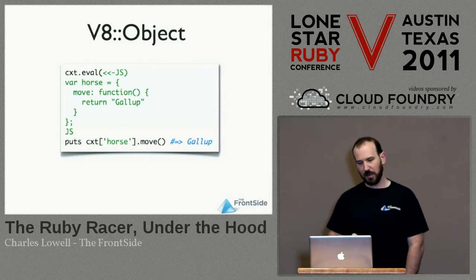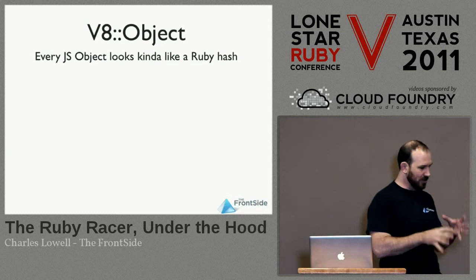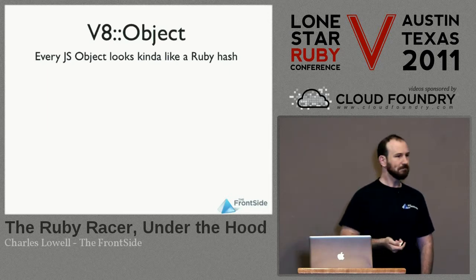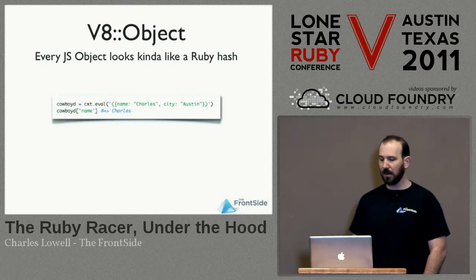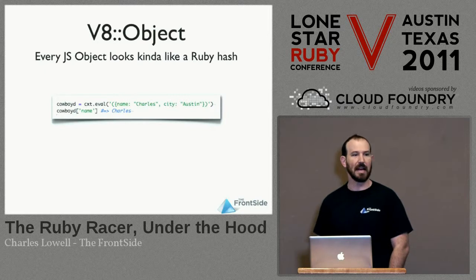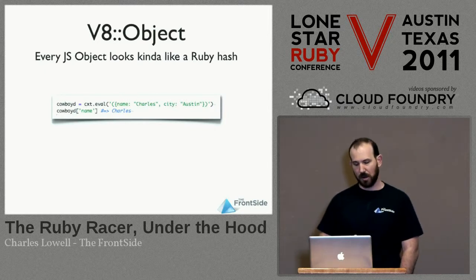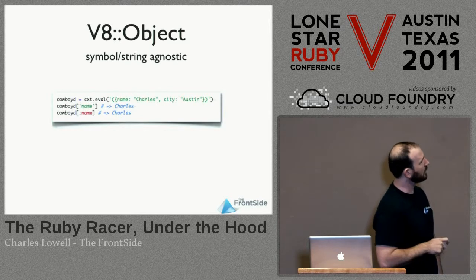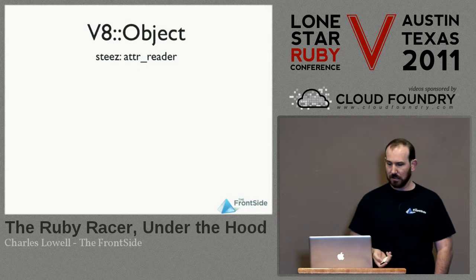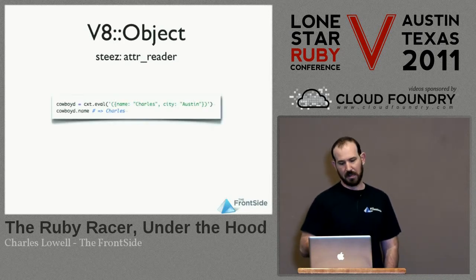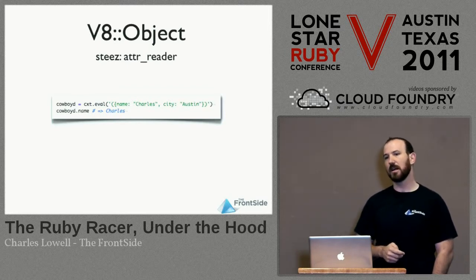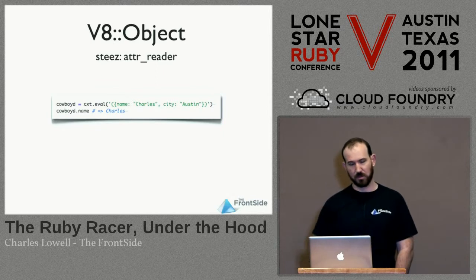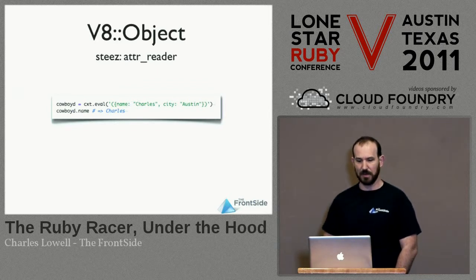There's a lot of synergy between JavaScript objects and Ruby objects. JavaScript objects are just property bags — they look kind of like a Ruby hash, so it makes sense that when you get a reference to them, you can use the hash syntax. You can look up properties by name and there they come. It doesn't really make a difference if you use a symbol or a string — it's the same deal. And if your property name is a valid Ruby identifier, you can just send it as a method and it'll do the right thing. That's mainly because JavaScript methods are really just properties.